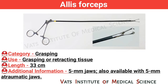Alice forceps. Category: grasping. Use: grasping or retracting tissue. Length: 33 cm. Additional information: 5 mm jaw, also available with 5 mm atraumatic jaw.